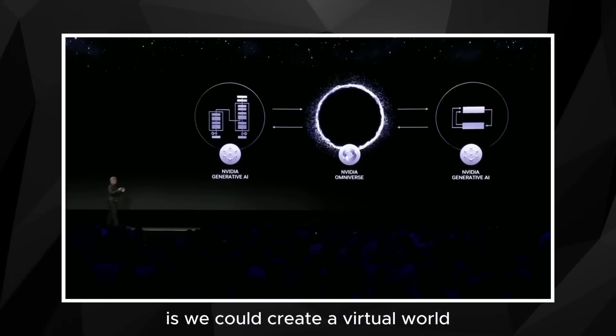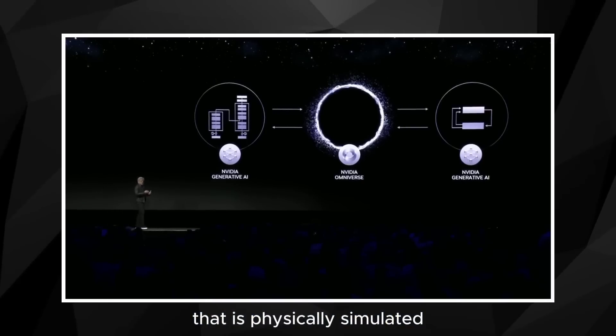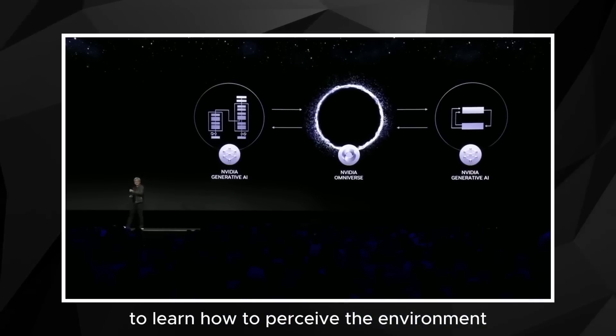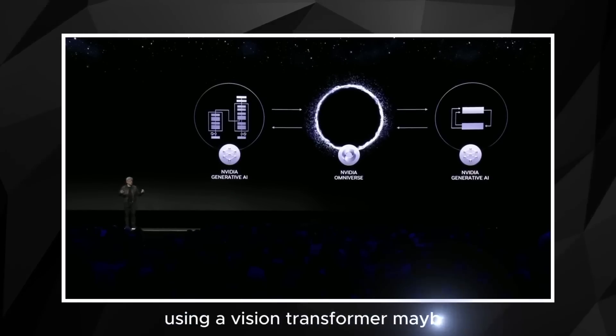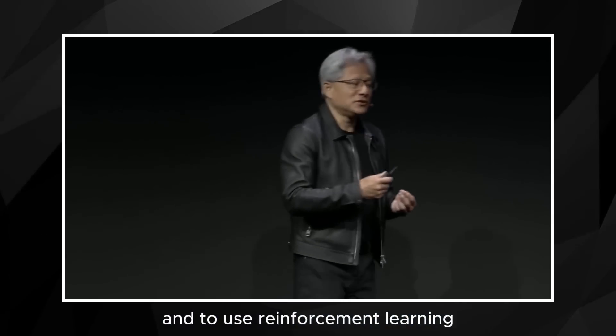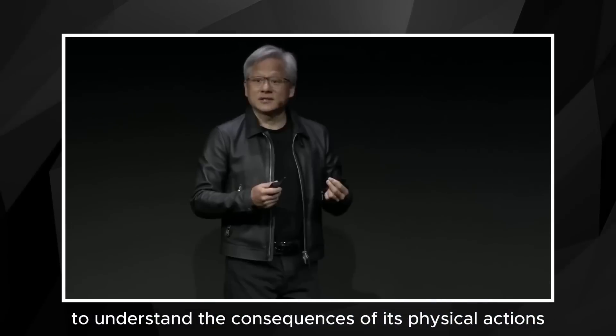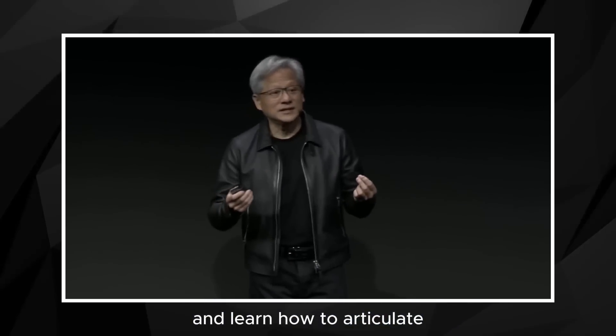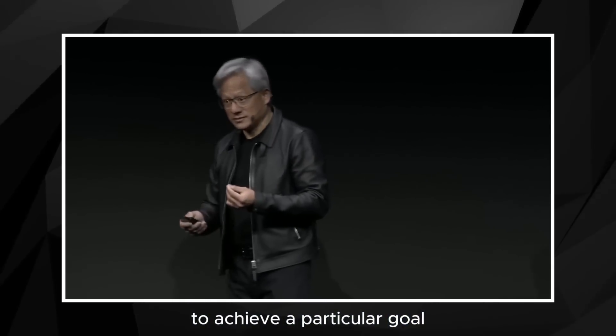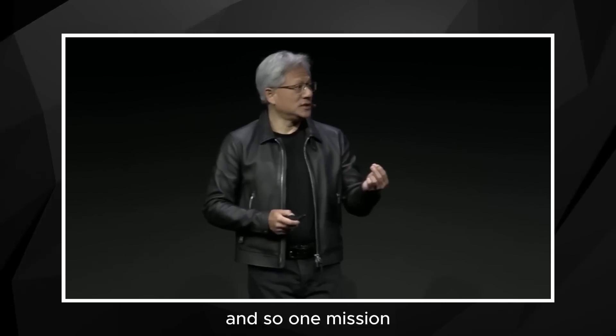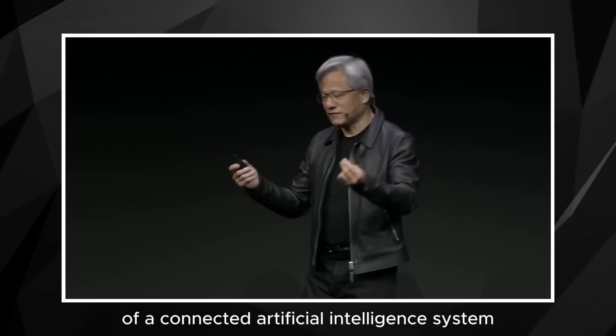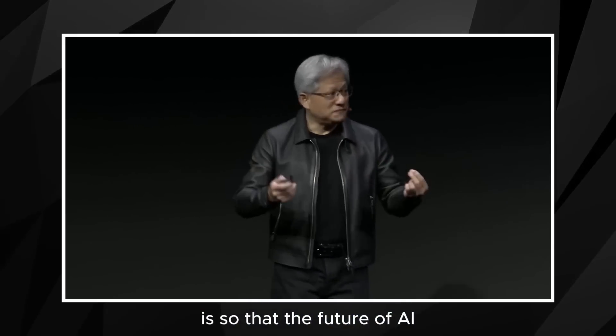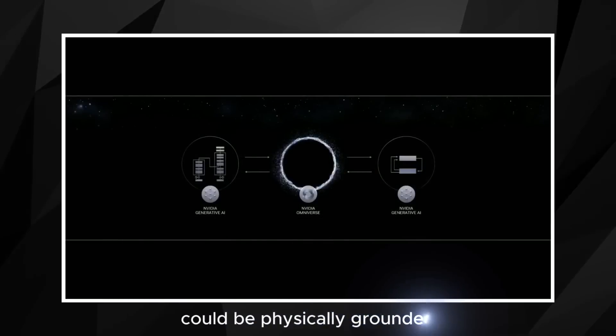The thing that we could do is we could create a virtual world that is physically simulated, a physics simulator that allows an artificial intelligence to learn how to perceive the environment using a vision transformer maybe, and to use reinforcement learning to understand the consequences of its physical actions and learn how to animate and learn how to articulate to achieve a particular goal. So one mission of a connected artificial intelligence system and a virtual world system that we call omniverse is so that the future of AI could be physically grounded.